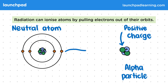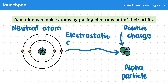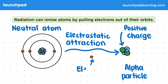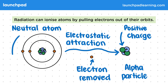Due to the electrostatic attraction, the alpha particle is able to pull an electron out of orbit, where the opposite charges are attracted to each other. This forms a positive ion, as there are now more protons in the nucleus than electrons.